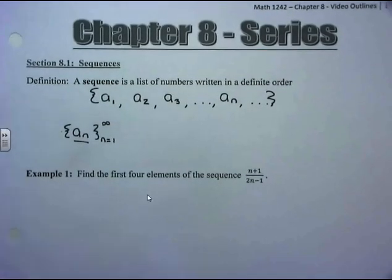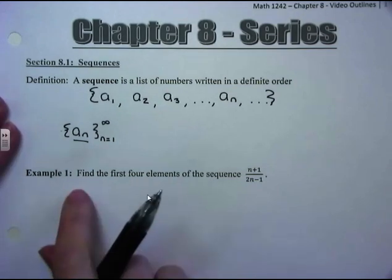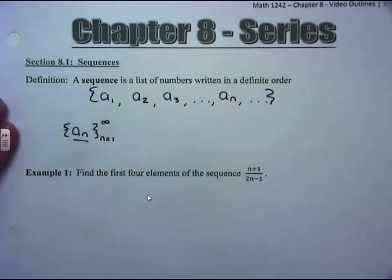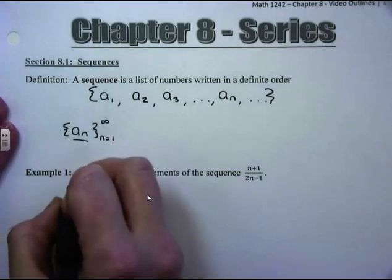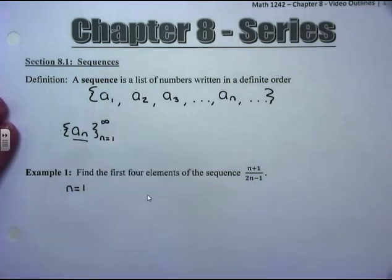Our first example is really just to get used to how we can take a formula for a sequence and expand it — write out what the sequence looks like as a list. Find the first four elements of the sequence (n+1)/(2n−1). We want to start with our first term, when n is equal to 1.